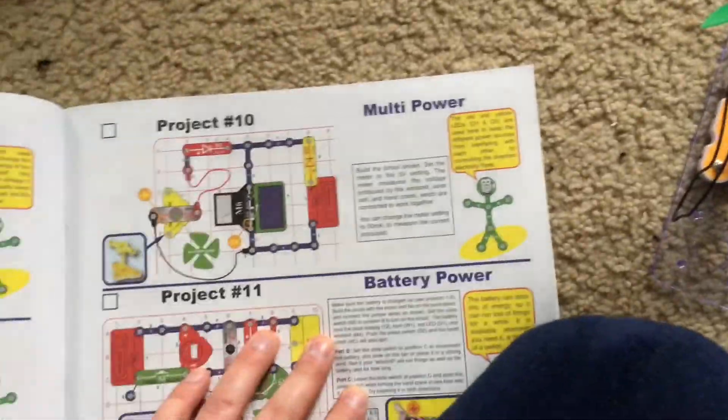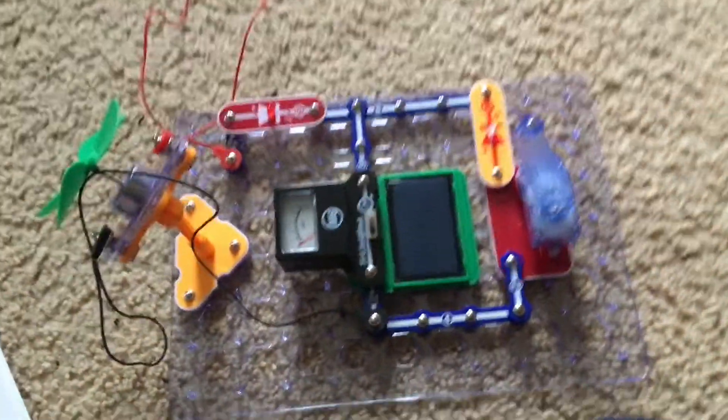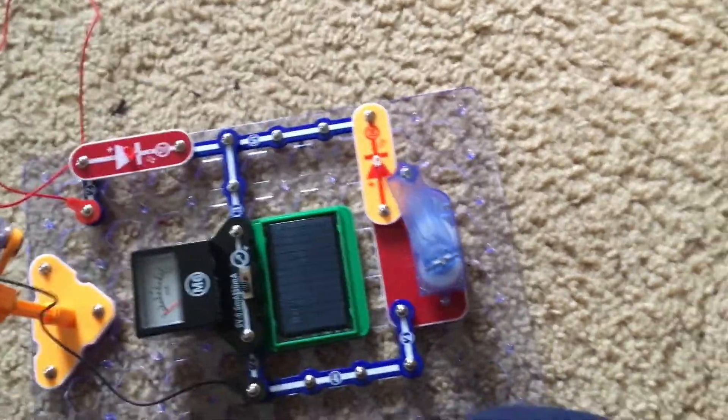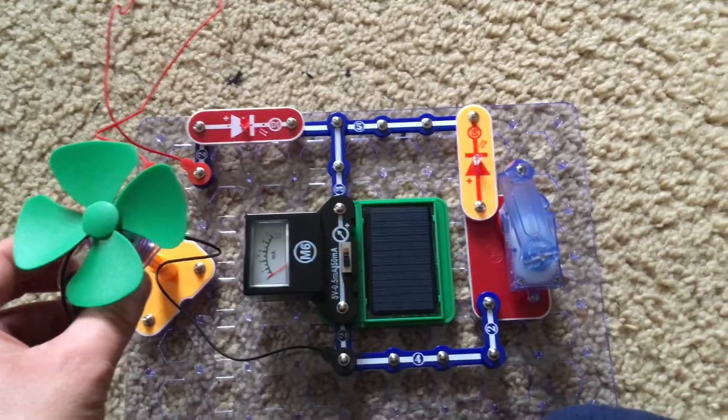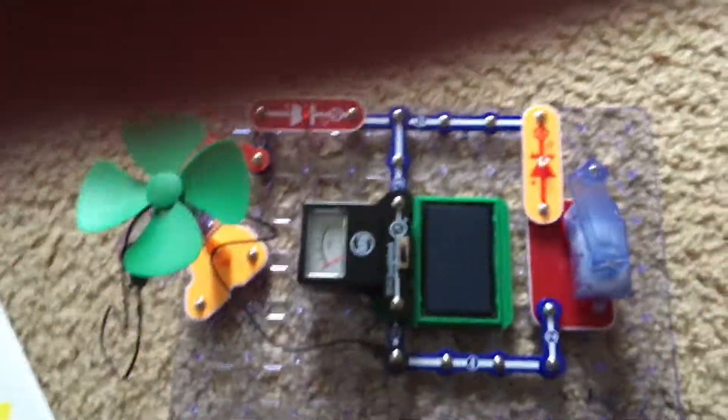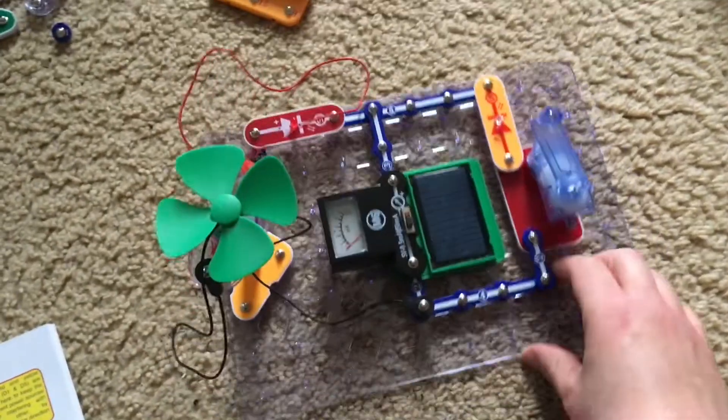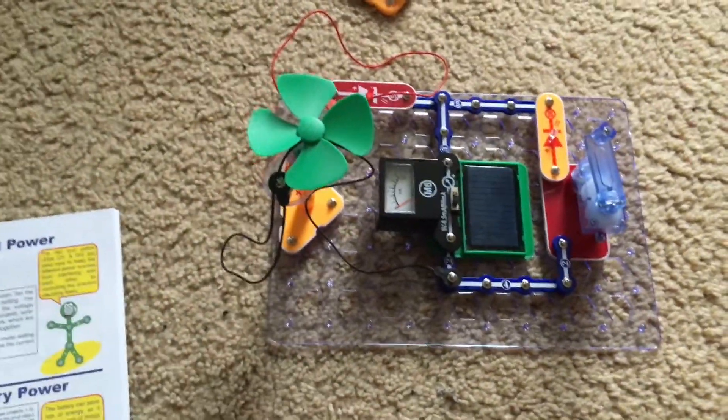Project 10, multi-power. This circuit has three sources of power which are connected to work together. We have the hand crank, the solar cell, and the motor which will act like a windmill.